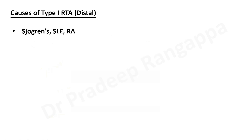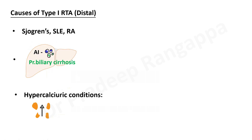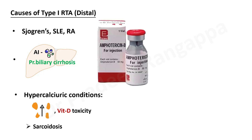The causes of type 1 RTA include autoimmune conditions like Sjogren's syndrome, SLE, and rheumatoid arthritis. Autoimmune hepatitis and primary biliary cirrhosis can also cause type 1 RTA. Hypercalciuric conditions like hyperparathyroidism, vitamin D toxicity, and sarcoidosis are other causes. Amphotericin B acts at the tubular level, causing inability to maintain pH balance between tubular lumen and cells.